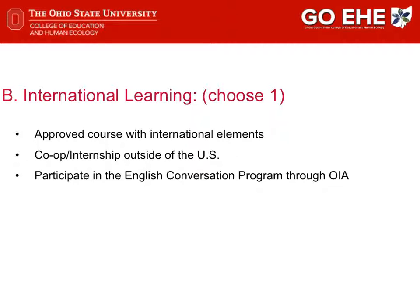GOE students have three options for the International Learning component. To satisfy this component, they may select one of the following: a course with international elements from an approved list, participation in a co-op or internship outside of the United States, or participation in the English Conversation Program, or ECP, through the Office of International Affairs for one semester.